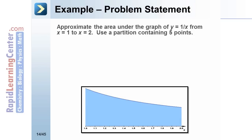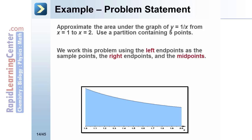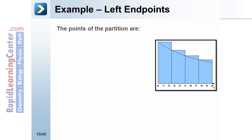Example 2: approximate the area under the graph of y equals 1 over x from x equals 1 to x equals 2, using a partition containing five points. We work this problem using the left endpoints, the right endpoints, and the midpoints as the sample points. The points of the partition are: x0 equals 1, x1 equals 5/4, x2 equals 3/2, x3 equals 7/4, and x4 equals 2.